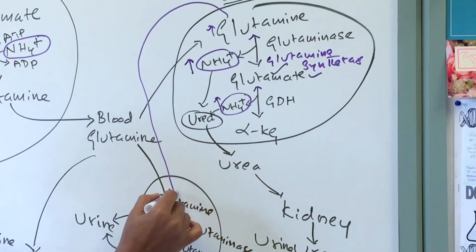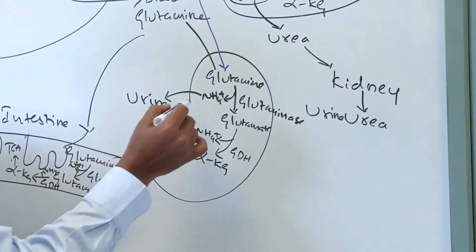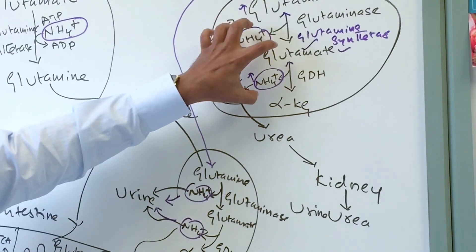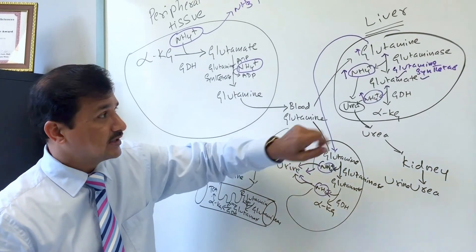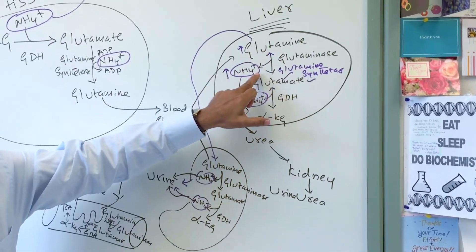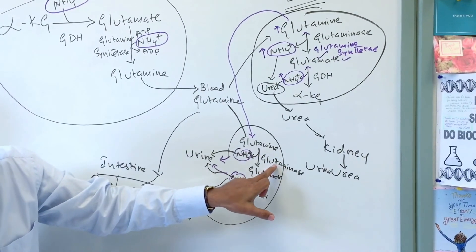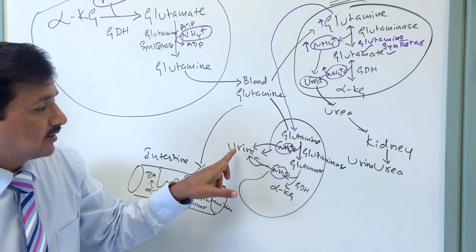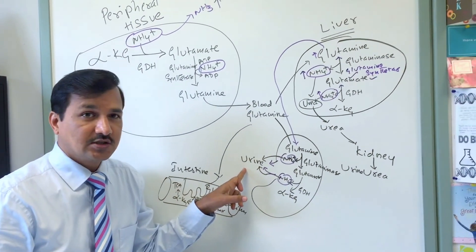When the urea cycle is saturated and excess glutamine is released into the bloodstream, the kidney takes it up. In the kidney, glutaminase breaks glutamine into glutamate releasing ammonium ion into the urine, and glutamate dehydrogenase further breaks glutamate into alpha-ketoglutarate releasing one more ammonium ion into the urine. This way, excess ammonium ion accumulating in the liver is excreted safely via the urine.